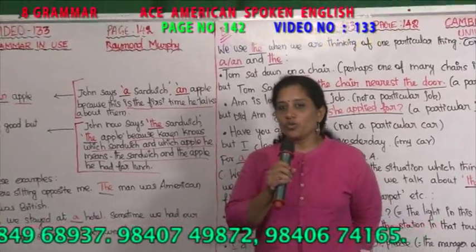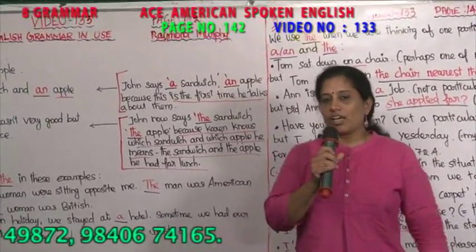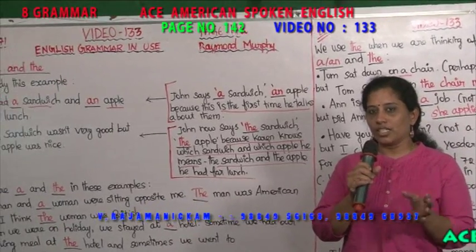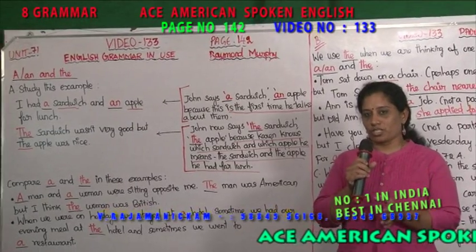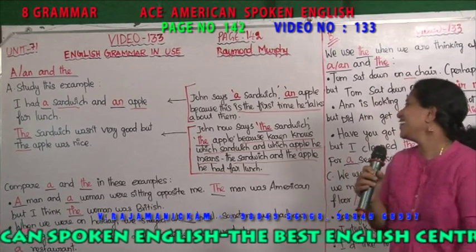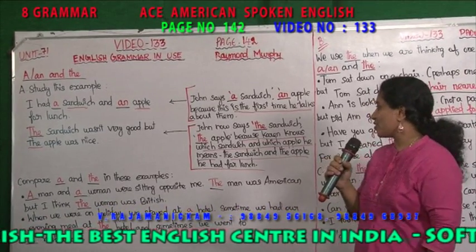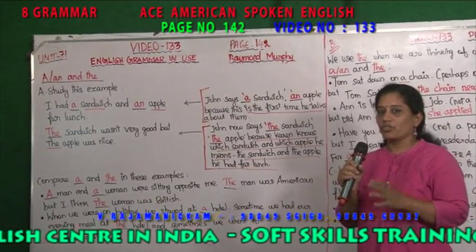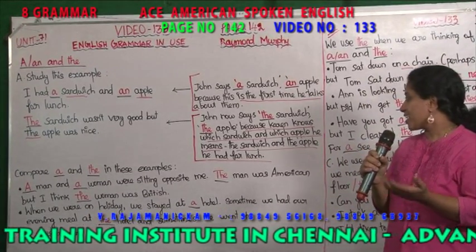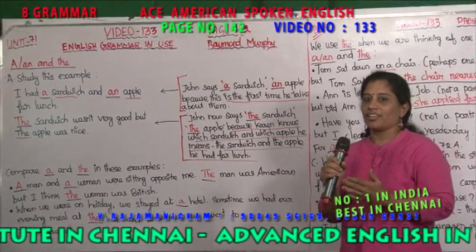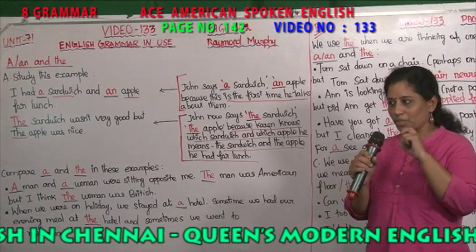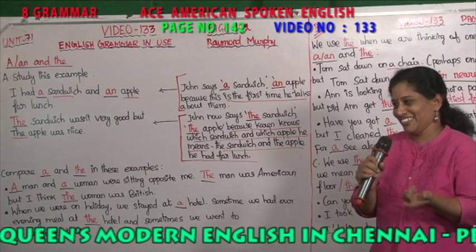Hello, good morning. Actually now we are going to learn about articles. Article means A, AN and THE. A and AN are used for indefinite articles, and THE is used for definite article. In this case: I had a sandwich and an apple for lunch. We are mentioning about a sandwich for the first time — it is a common noun. When we are speaking about the same object again, then we have to put THE before that, because we know we are mentioning about the particular object which we told before.